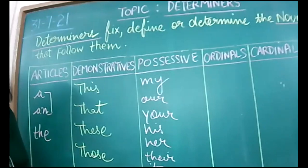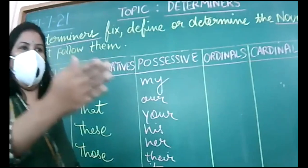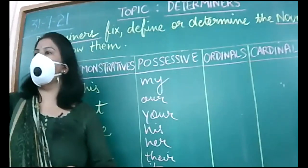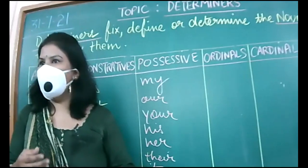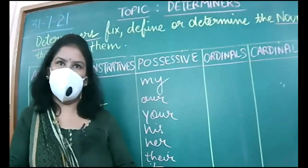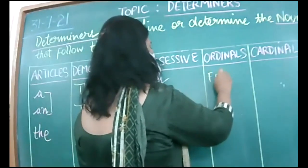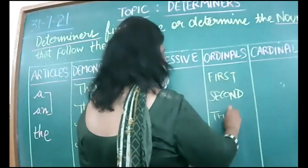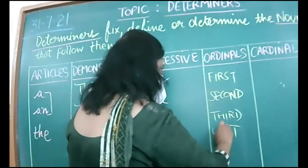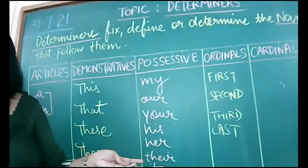Next we have ordinals. If I say 'first boy in the class' or 'last girl sitting at the bench' — first, second, third, fourth, fifth, sixth — these are ordinals. You might have done ordinals in maths also. Examples: first, second, third, last, and so on.